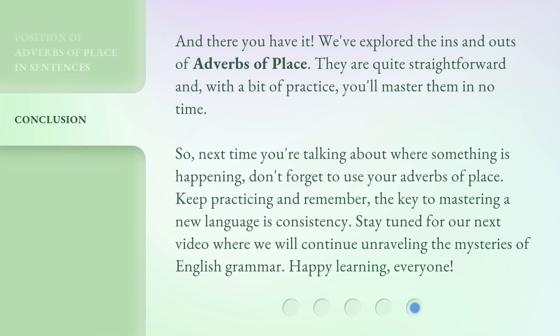And there you have it. We've explored the ins and outs of adverbs of place. They are quite straightforward and, with a bit of practice, you'll master them in no time. So, next time you're talking about where something is happening, don't forget to use your adverbs of place. Keep practicing and remember, the key to mastering a new language is consistency. Stay tuned for our next video where we will continue unraveling the mysteries of English grammar. Happy learning, everyone!